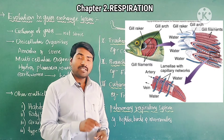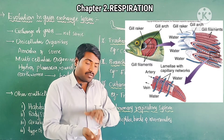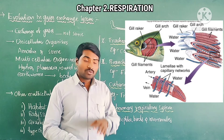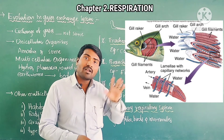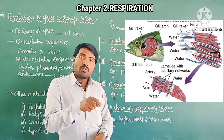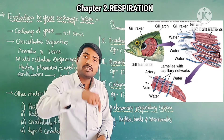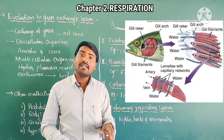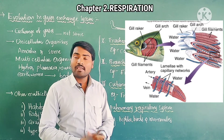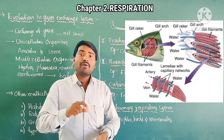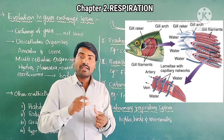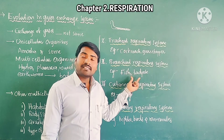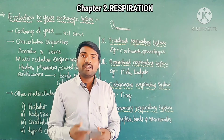As water passes over the gill lamellae, oxygen from the water diffuses into the blood capillaries. The capillaries already containing carbon dioxide release it into the water. So by the process of simple diffusion, gas exchange takes place between the water and the gill lamellae. This is called the branchial respiratory system.